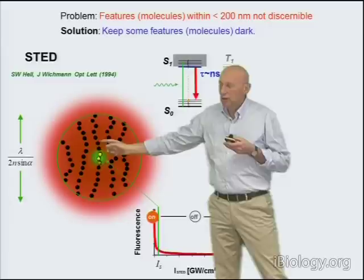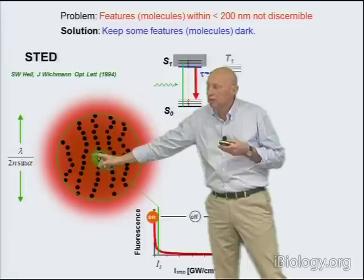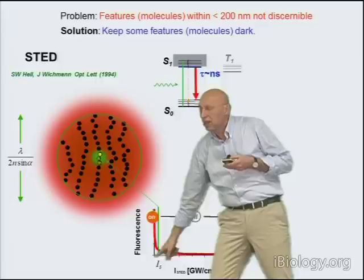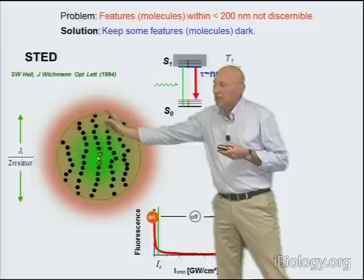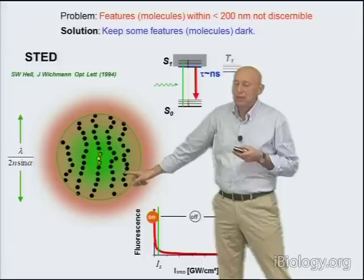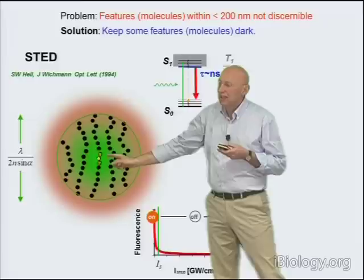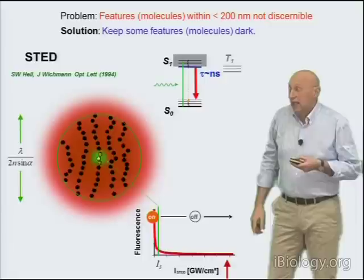We have shaped the STED beam into a doughnut pattern because we don't want to shut off all the molecules — we want to see some. We want to discern features like one microtubule from another. So we want to keep an area where the molecules are still capable of emitting. This area is where the intensity of the doughnut is smaller than the threshold intensity IS. Despite the fact that all molecules are covered with excitation light, only those in this central region are allowed to emit — the rest is silenced. This is the basic principle of STED microscopy: only a subset of molecules is capable of emitting within this 200-nanometer zone, namely a subset located at a specific position predetermined by the shape of the STED beam.